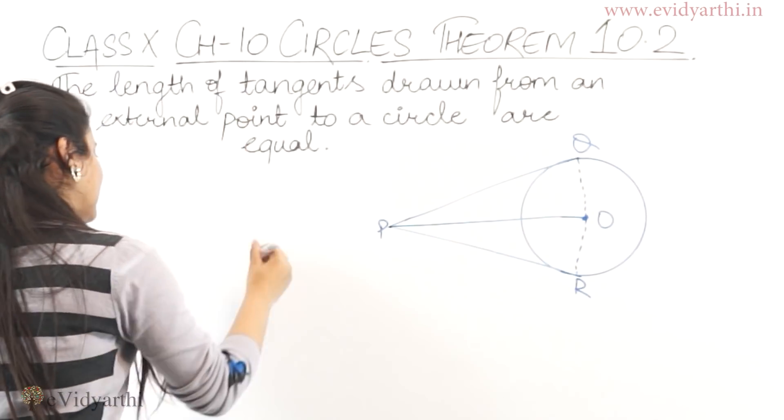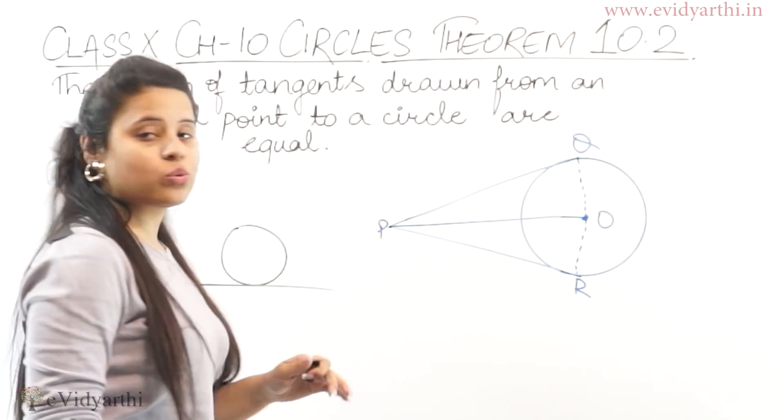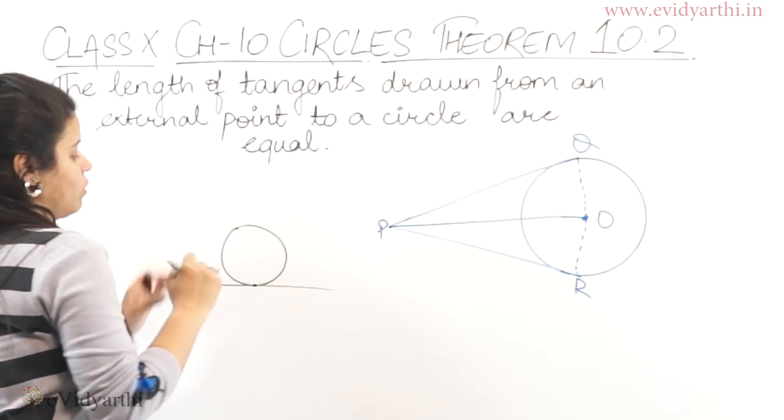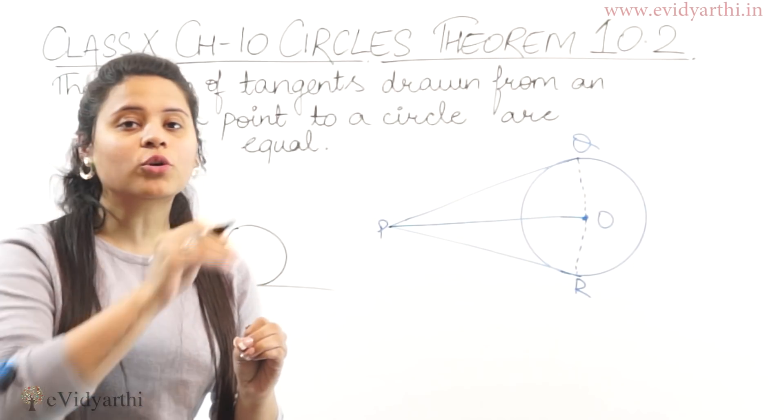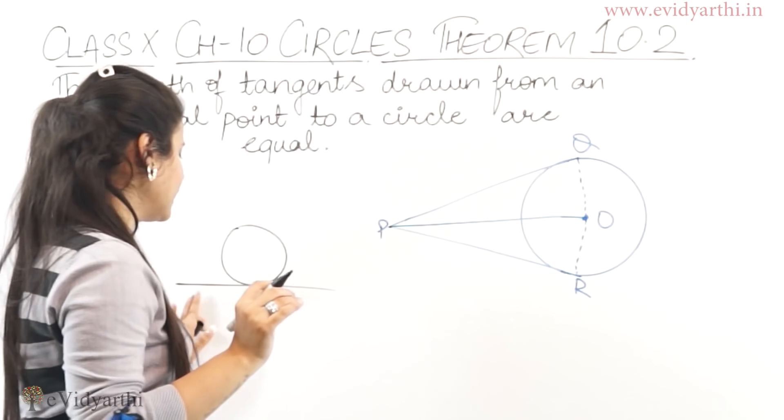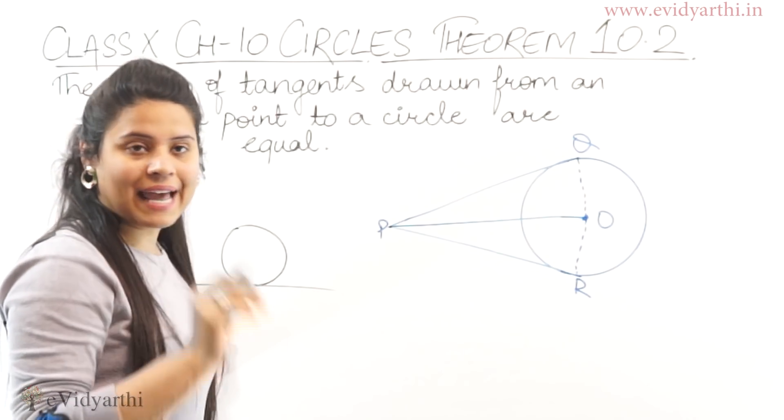What will be the tangent if you have a circle and a line passing? When the line of a circle is intersecting or touching the circle, we say that this is the tangent of the circle.